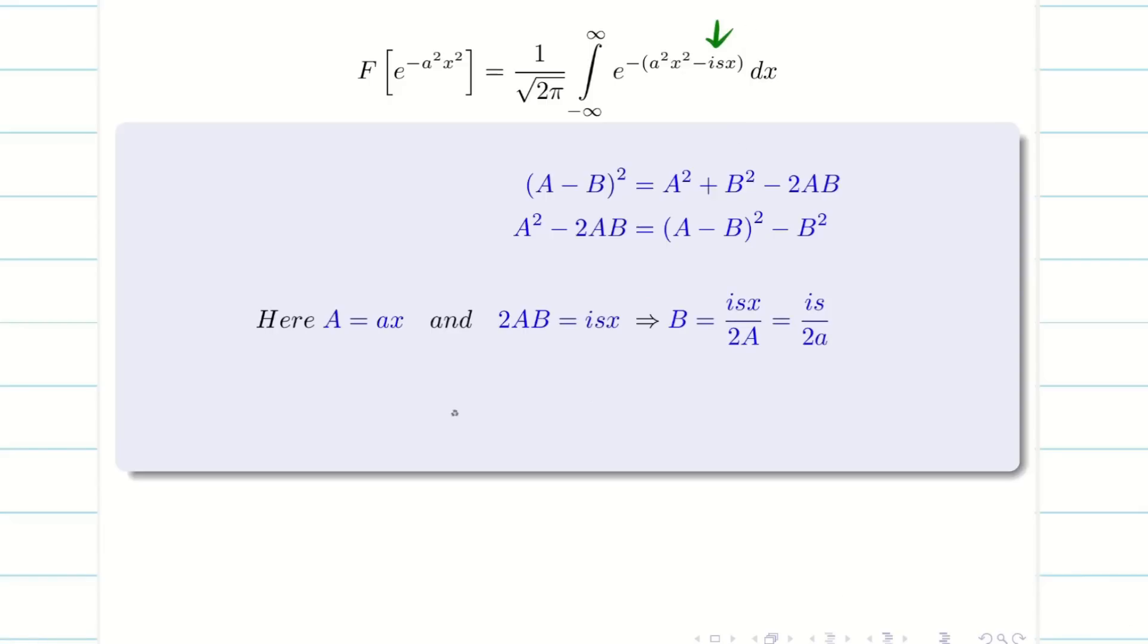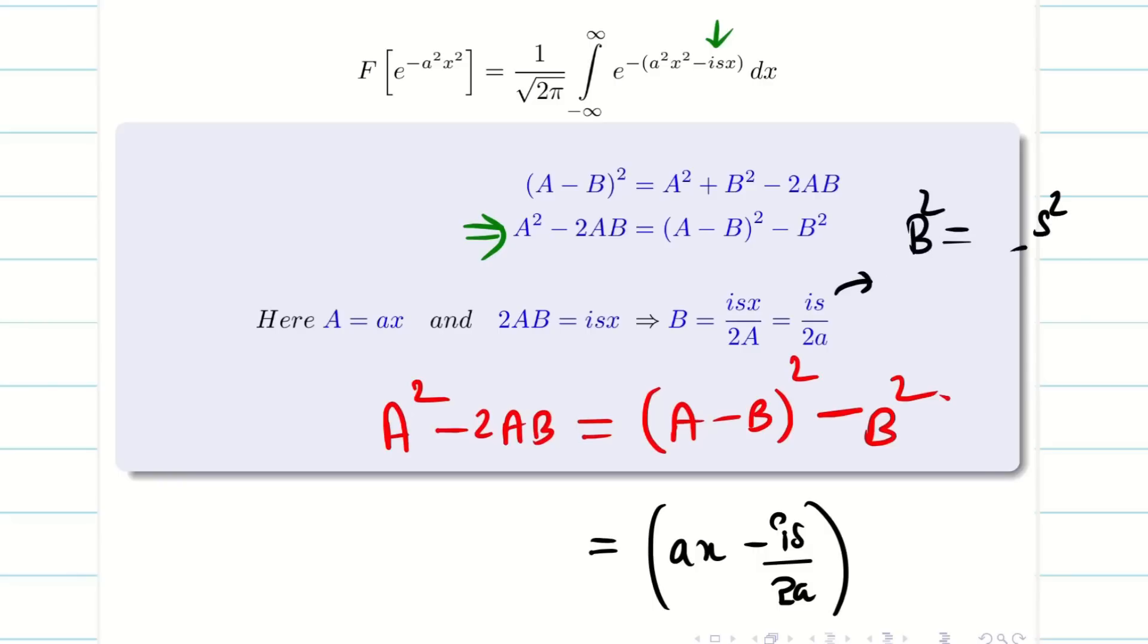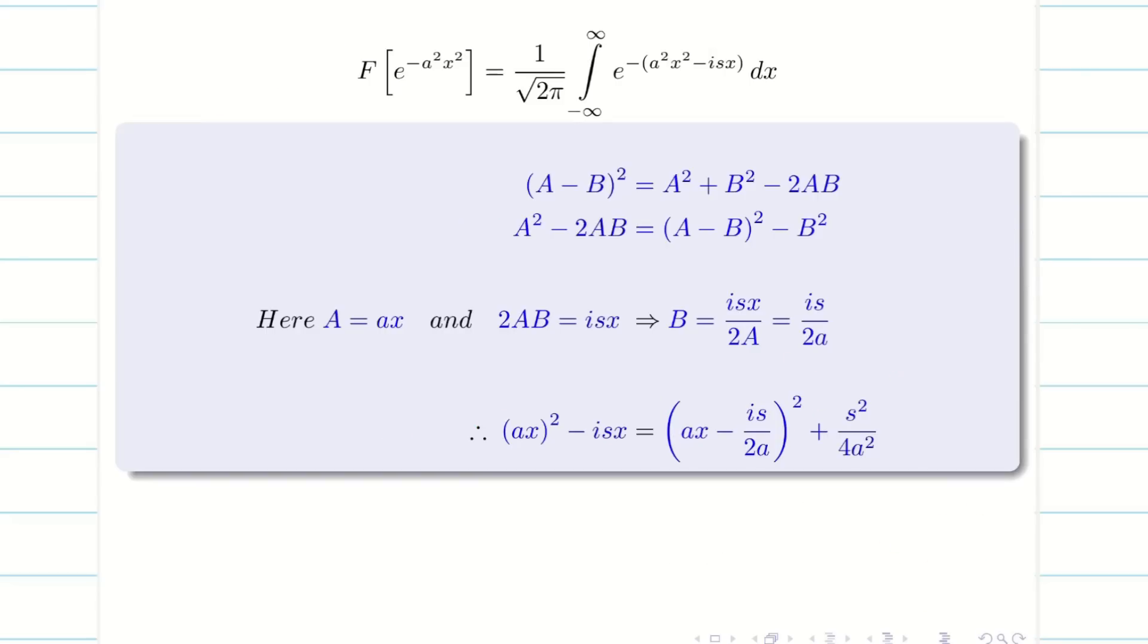Now this was a tough job for me - that A squared minus 2AB. But the other side is very simple. It's going to be A minus B whole square minus B squared. I can simply write this as ax minus is by 2a. When I square this, B squared will become s squared by 4a squared. My i squared will become minus 1 because we know that i equals square root of minus 1. Therefore i squared is going to be minus 1. So already one minus is there. Minus times minus gives plus s squared by 4a squared.